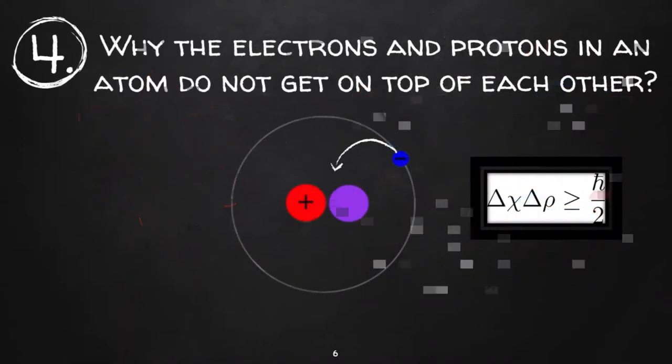You may ask why electrons and protons in an atom don't get on top of each other. According to the uncertainty principle in quantum mechanics, when you try to confine electrons and protons in a region, the mean square momentum gets larger as you try to confine them more. This is why electrons and protons don't collapse together.